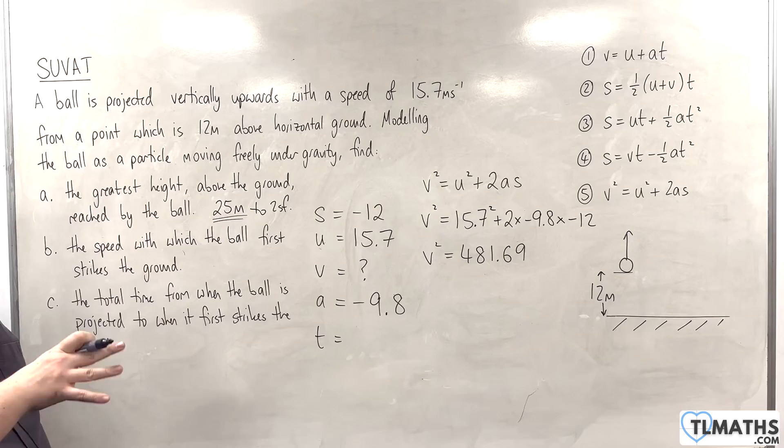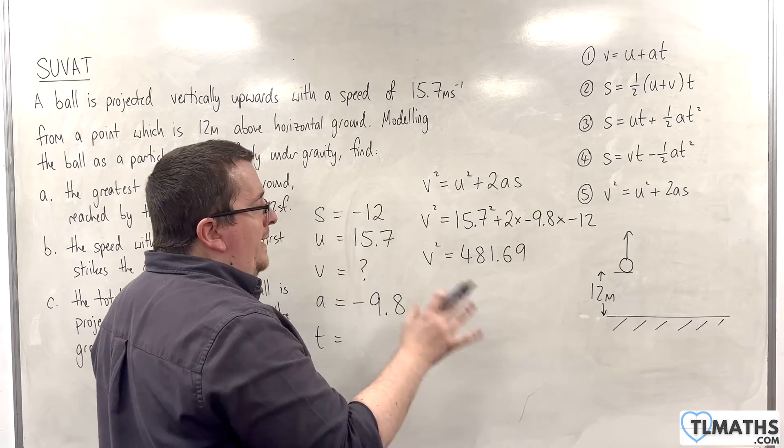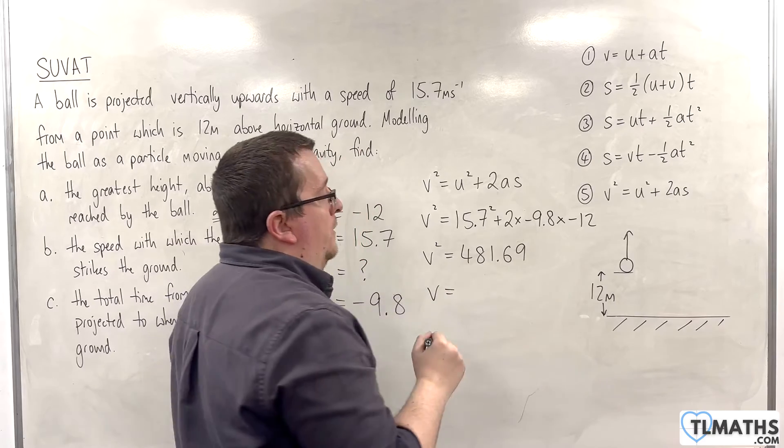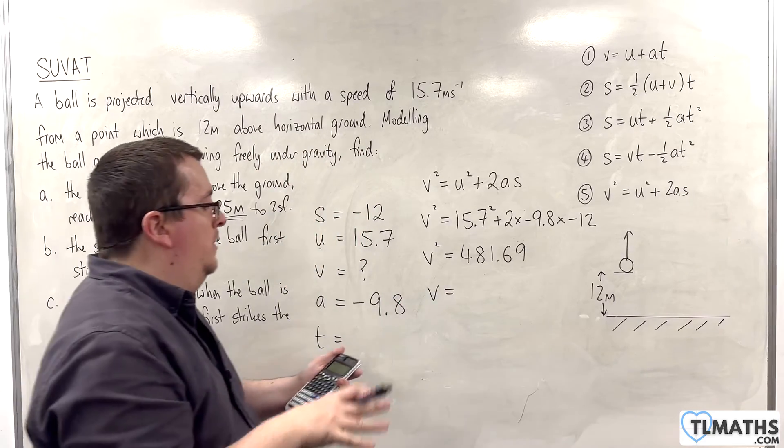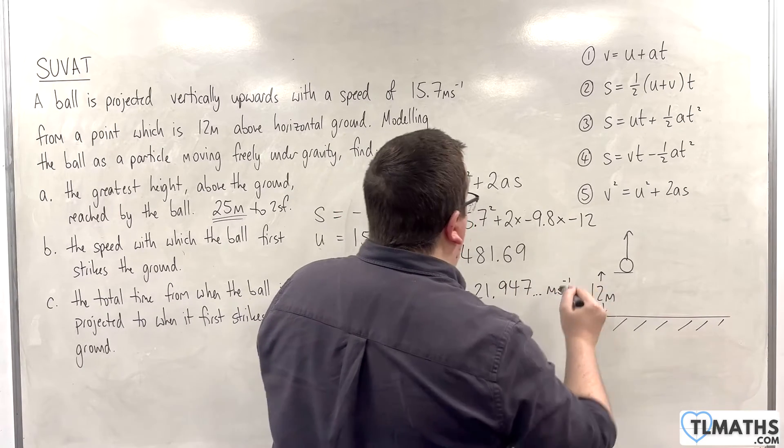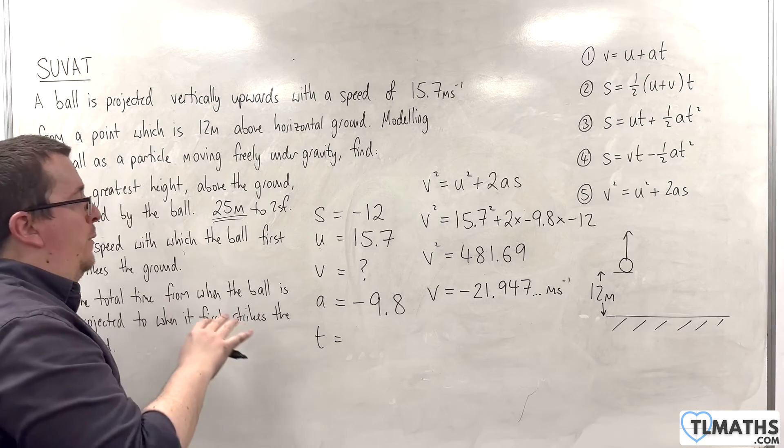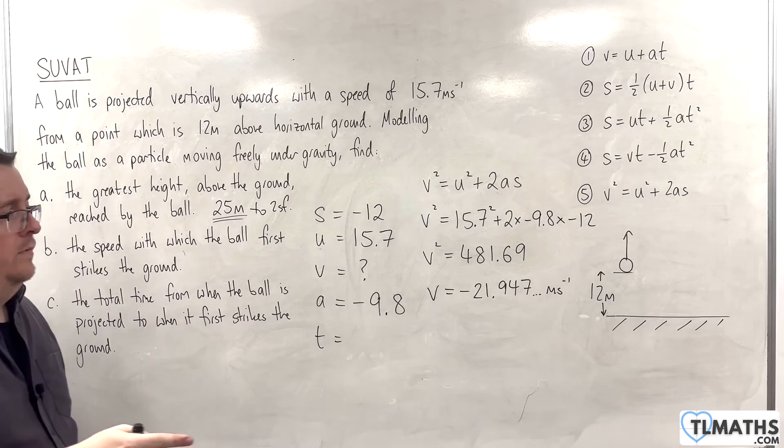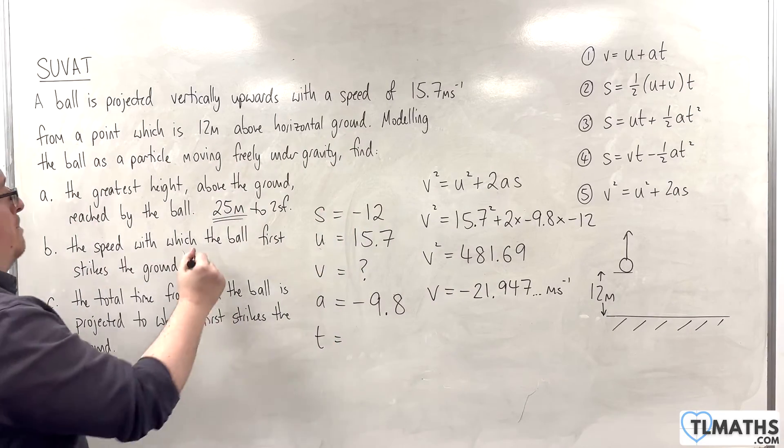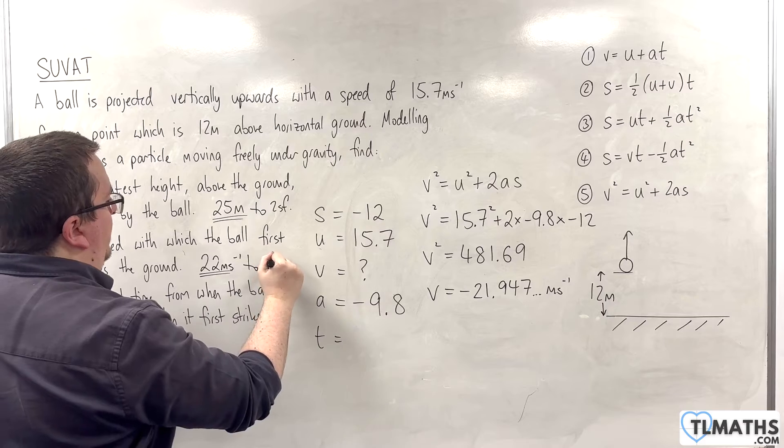Now, remember, I'm taking upwards as positive. So, in square rooting, actually, the velocity when it hits the ground is travelling downwards. So, the final velocity V is actually minus 21.947 metres per second, because it's travelling downwards at that point. So, the speed, however, obviously ignores the direction, and I still need to round it to two significant figures, and so that would be 22 metres per second to two significant figures.